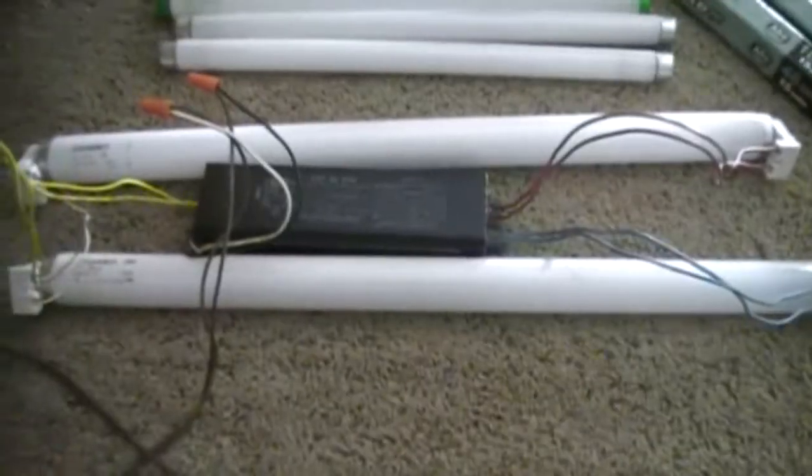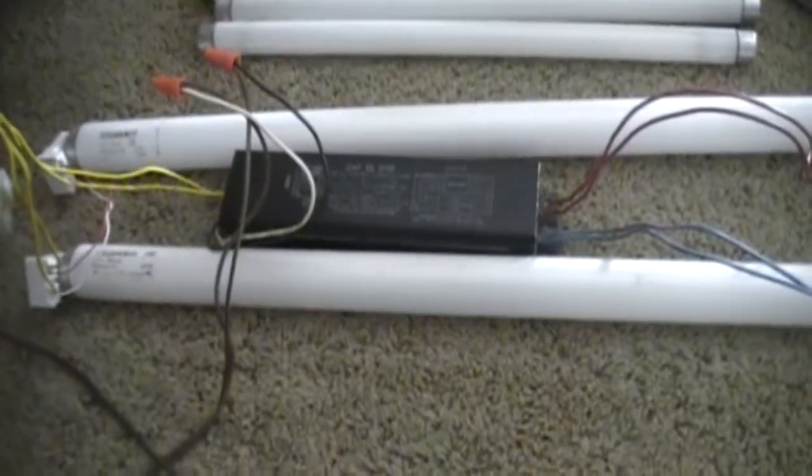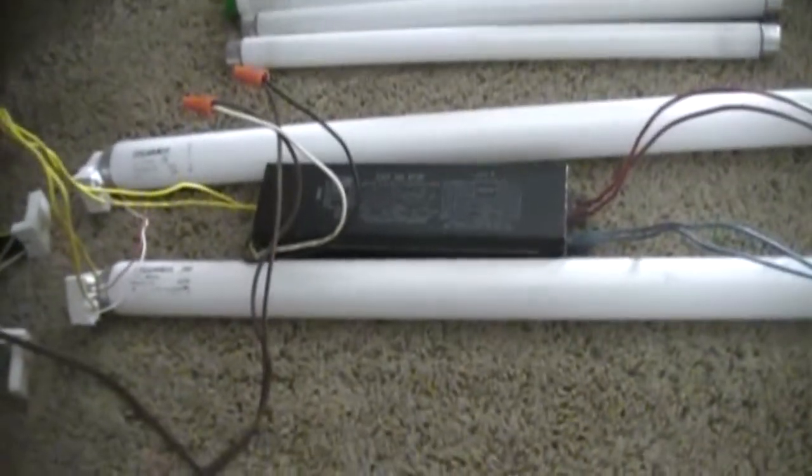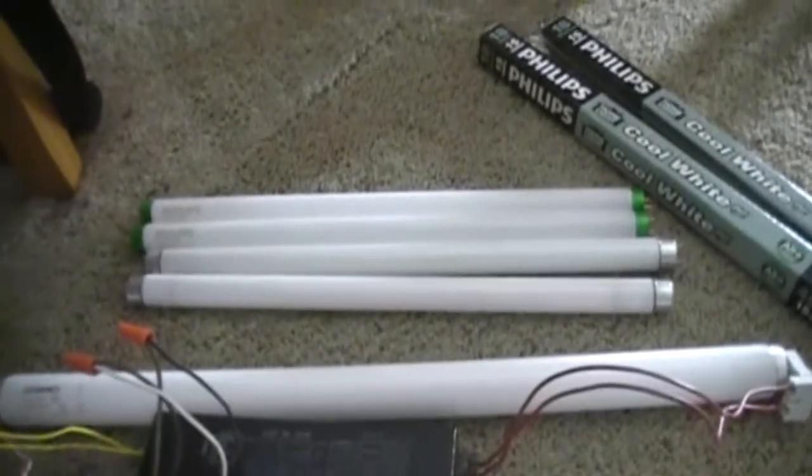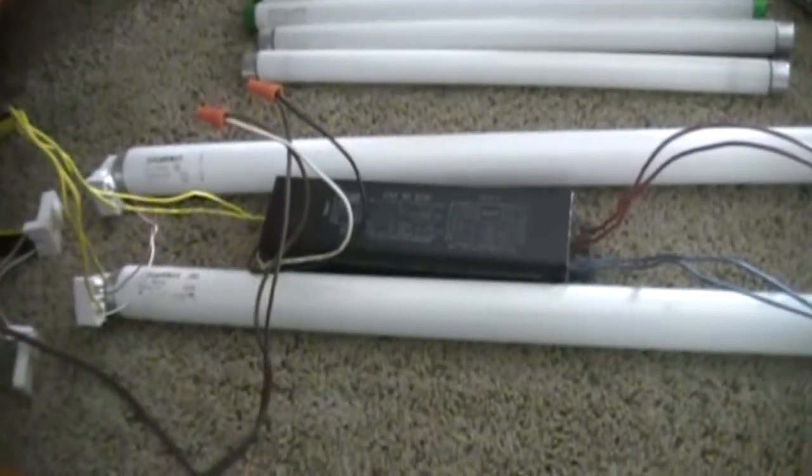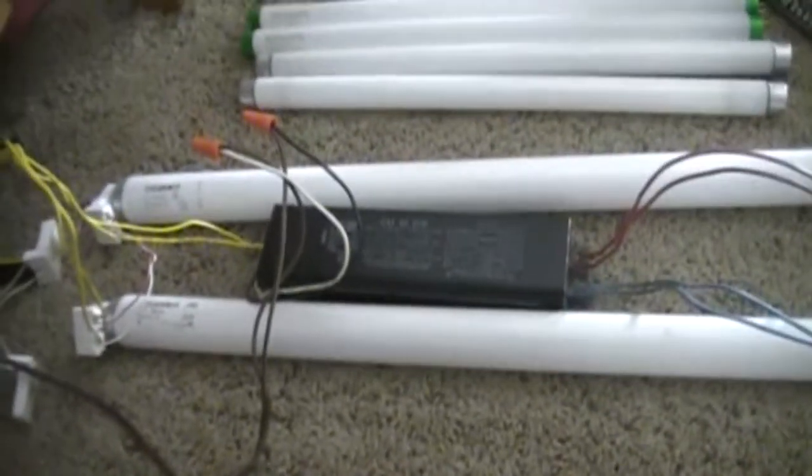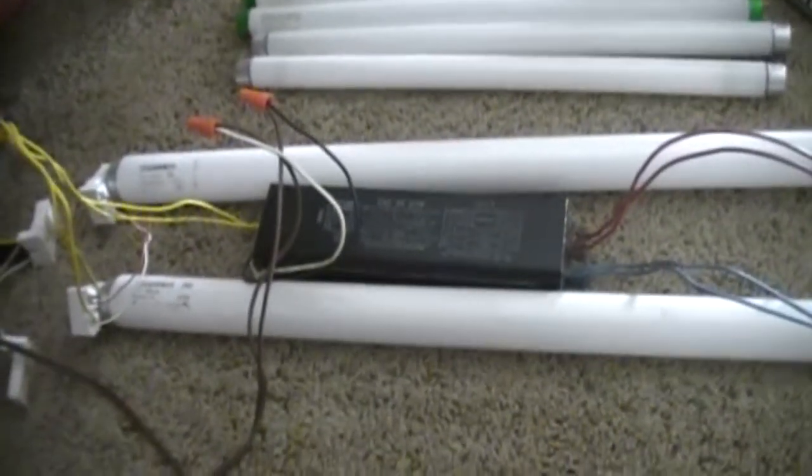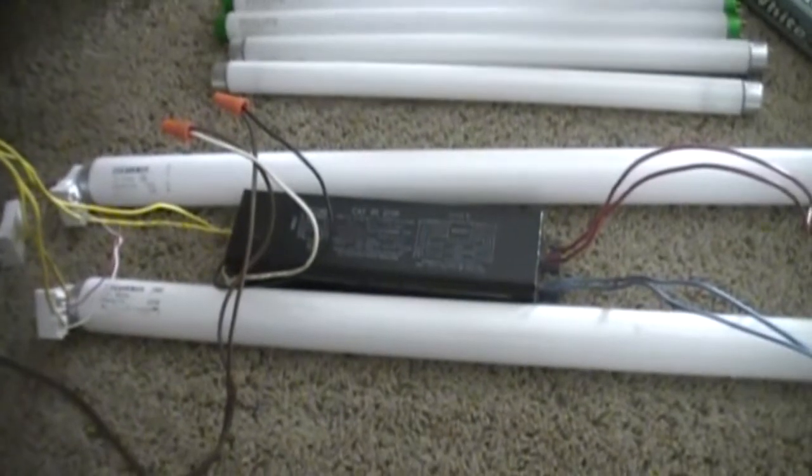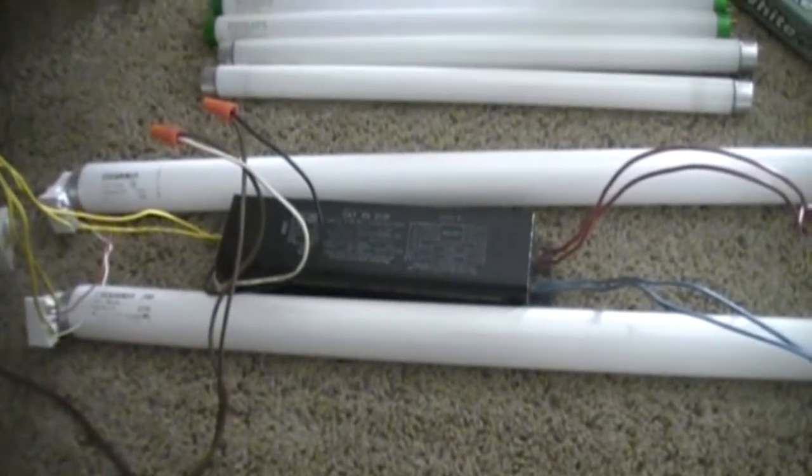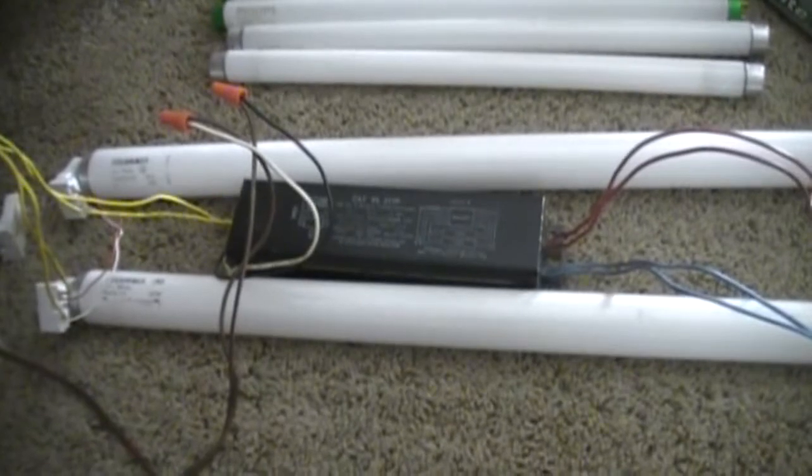Anyway, another thing that I'd like some input on is I'm considering building a fixture for this ballast. I would like to have some input on what size lamps I should build it for, whether I should build it for 18 inch 15 watts or 24 inch 20 watt bulbs. Of course, I can always find another one of these ballasts and make fixtures for both, but in the event that I can't find another one, some input would be appreciated on that.